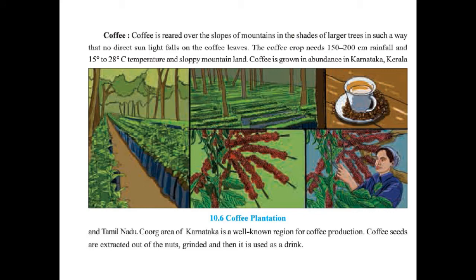Next is coffee. Coffee is grown over the slopes of mountains in the shade of larger trees so that no direct sunlight falls on the coffee leaves. The coffee crop needs 150 to 200 cm of rainfall, 15 to 28 degree Celsius temperature, and slopey mountain land. Coffee is grown in abundance in Karnataka, Kerala, and Tamil Nadu. The Kurg area of Karnataka is a well-known region for coffee production. Coffee seeds are extracted from the nuts, grinded, and then used as a drink.